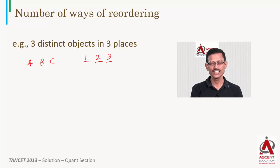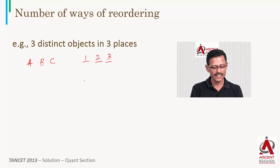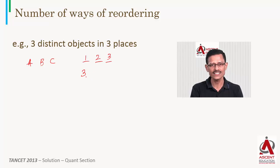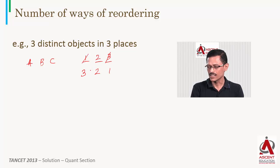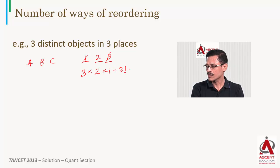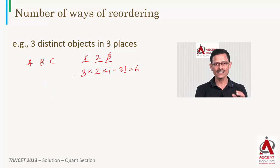Each chair will have exactly one student. When A walks in, A could take any one of the three vacant chairs, so A has three choices. When B walks in, the number of choices B will have is down to 2. When C walks in, there is only 1 choice left. So the total number of ways is 3 × 2 × 1, which is 3 factorial, equal to 6.